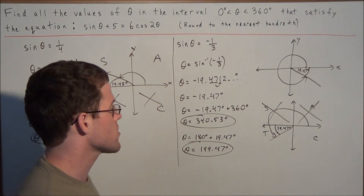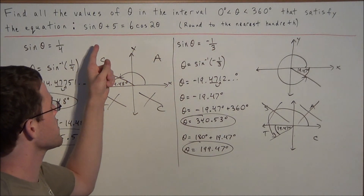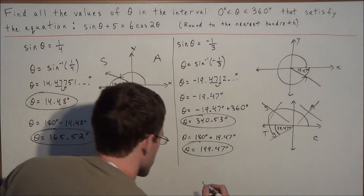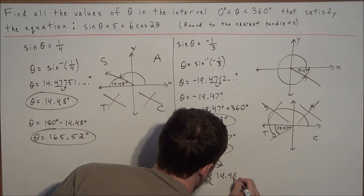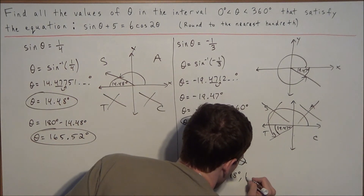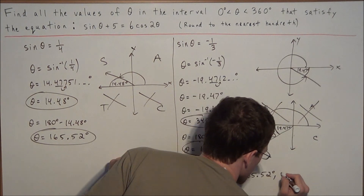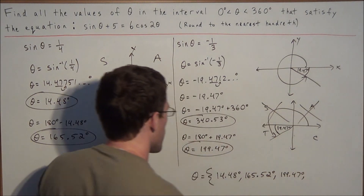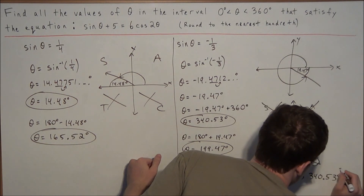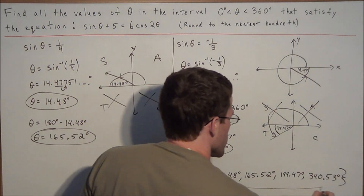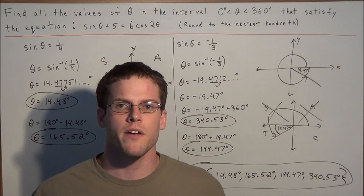We can now write the complete solution. We were looking for all values of theta in the interval from 0 to 360 degrees satisfying sine theta plus 5 equals 6 times cosine 2 theta. The four solutions are: theta equals 14.48°, 165.52°, 199.47°, and 340.53°. To solve this problem, numerous techniques were needed, but solving it systematically leads to the solution. This concludes the video on solving trigonometric equations — thank you for watching.